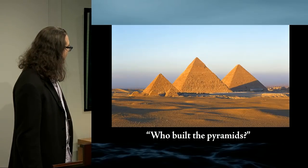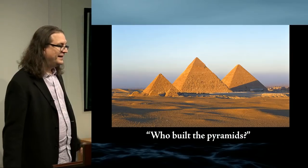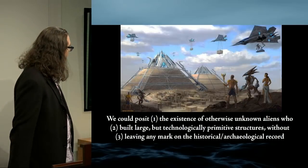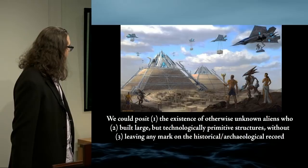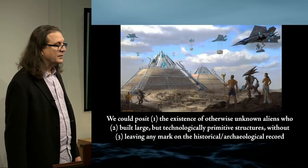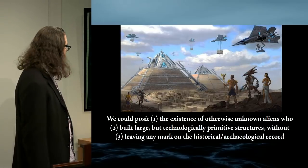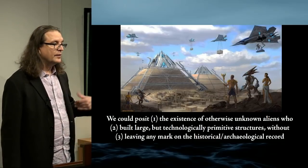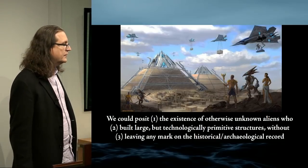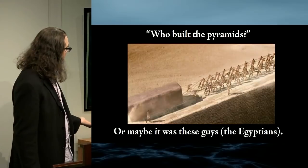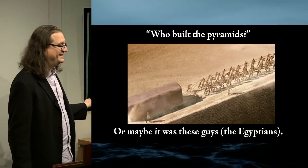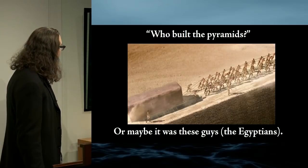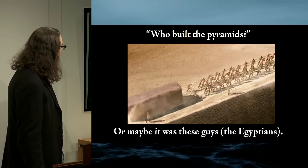In the same way: who built the pyramids? We could posit the existence of otherwise unknown aliens who built large, technologically primitive structures without leaving any mark on the historical or archaeological record. Or maybe it was the Egyptians themselves. Those are the same kinds of competing models, and Occam's razor guides us toward the simpler one.